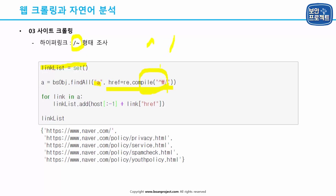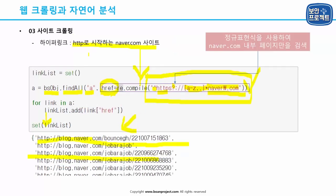슬래시로 시작하는 절대 경로 링크들을 불러옵니다. 이것들은 앞에 연결된 사이트 목록을 정리할 때 문제가 되는데, 슬래시 경로만 저장하면 다음 사이트로 넘어갔을 때 어느 사이트인지 확실하지 않습니다.